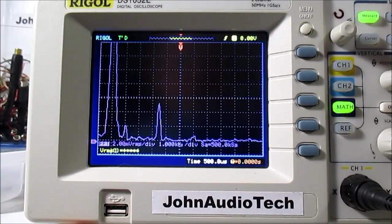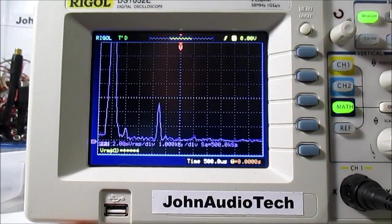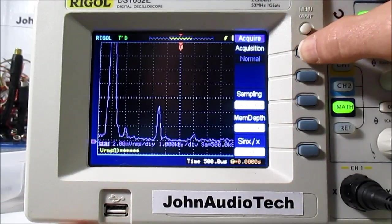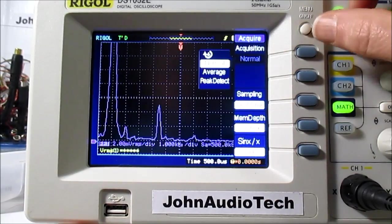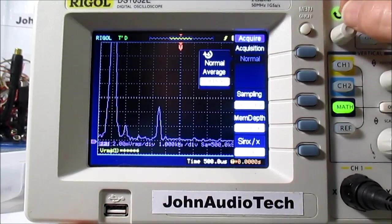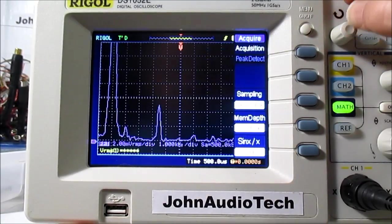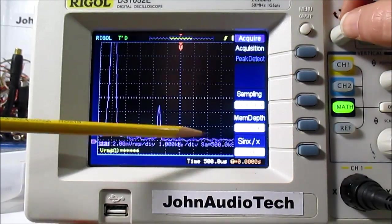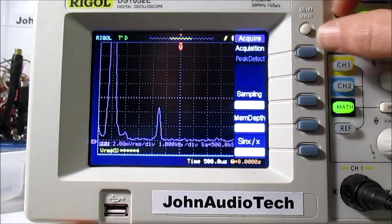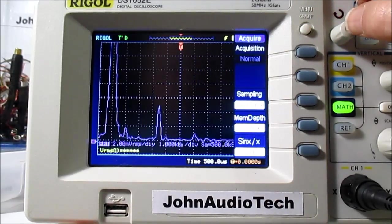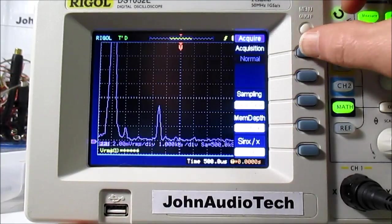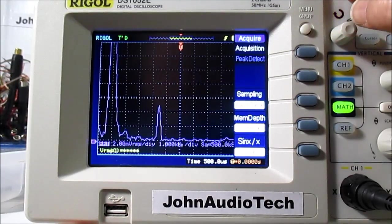Now another thing you might want to adjust with your scope is the acquisition. Hit your acquisition button here. If it has a high res mode, you want to use that. Sometimes you get better results with this scope in Peak Detect. You can see how I lost some of those peaks. I get some false peaks in normal mode, so I want to use Peak Detect mode on this scope.